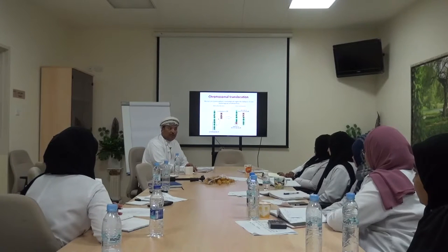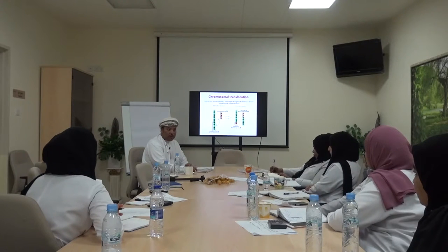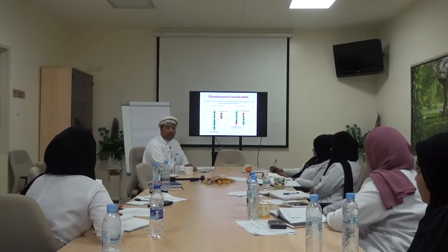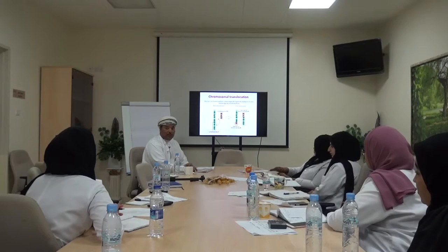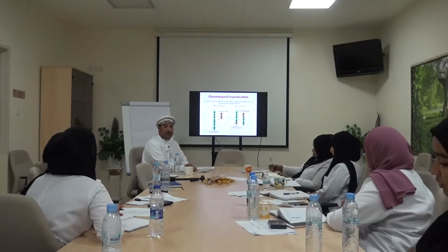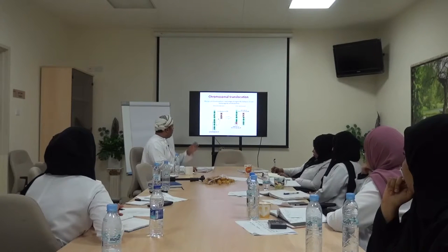Types of translocations include Robertsonian translocation — between acrocentric chromosomes — and reciprocal translocation, which occurs between two non-homologous chromosomes. Robertsonian translocation accounts for about 4-5% of all Down syndrome cases. The most common translocation in Down syndrome is between chromosomes 21 and 14.